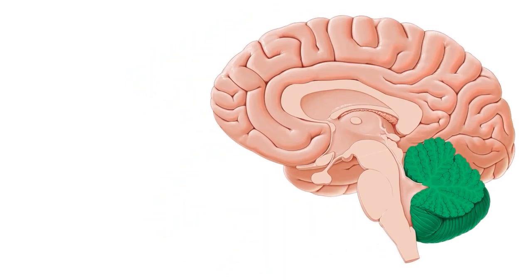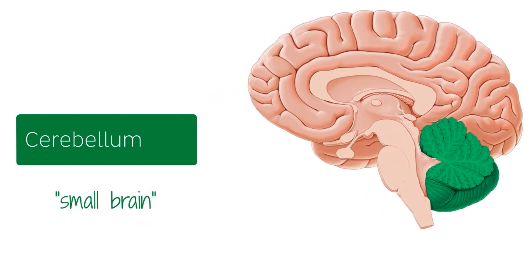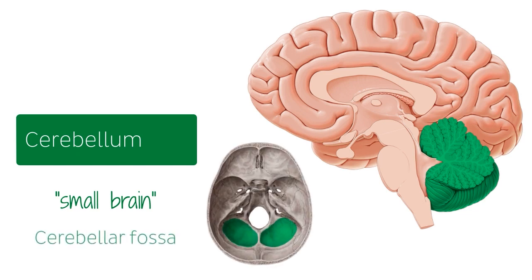Moving to the next image, you can see the cerebellum highlighted in green on a mid-sagittal section. The term cerebellum comes from Latin which means 'a small brain,' and if you see the cerebellum in this medial view of the brain, you see that it looks like a small brain located inferior to the occipital lobe of the brain, behind the brain stem. Inside the skull, the cerebellum is located in what we call the cerebellar fossa, highlighted here in green on this image of the superior view of the cranial vault or the cranial base.